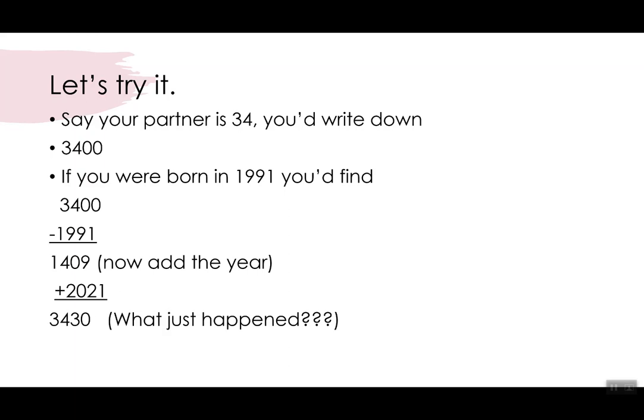What just happened? Well if you were born in 1991 and it's 2021 that means you're 30, so you have 3430. It means your partner's 34, you're 30, and oh my god you're married to your soulmate or you're with your soulmate.